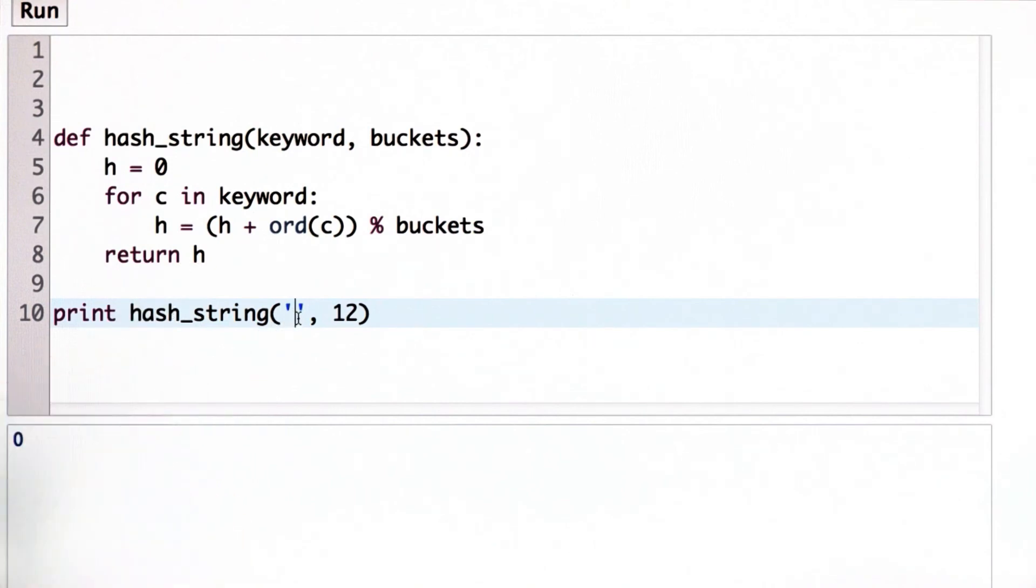And let's also try the longer example. When we hash the string Udacity with 12 buckets, we get bucket 11. We should be able to increase the number of buckets. So let's increase the number of buckets. Let's suppose we have 1,000 buckets. And we get bucket 755.